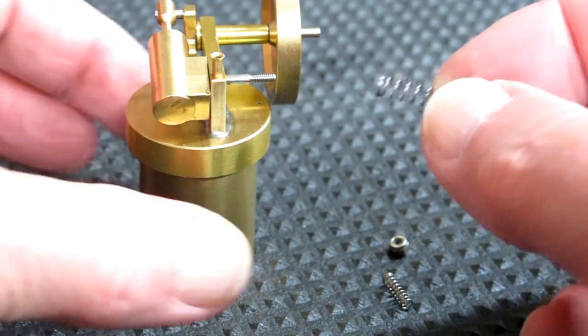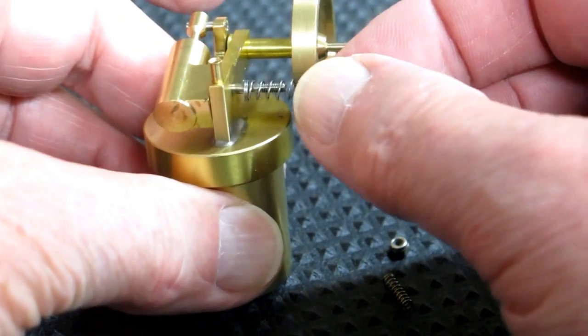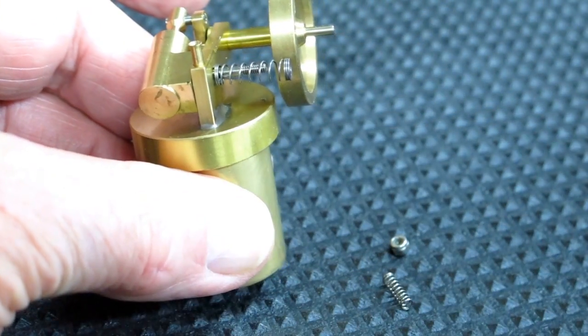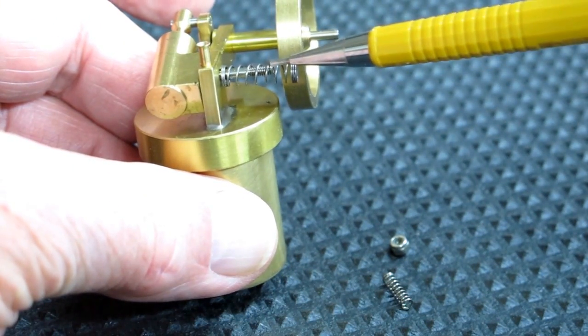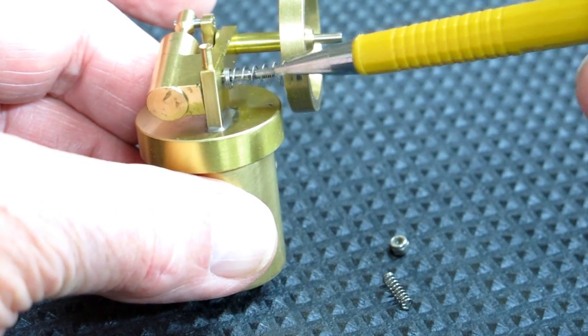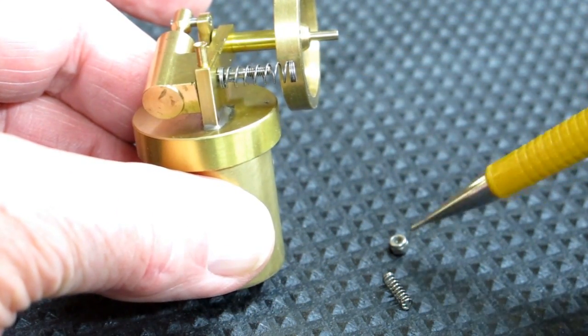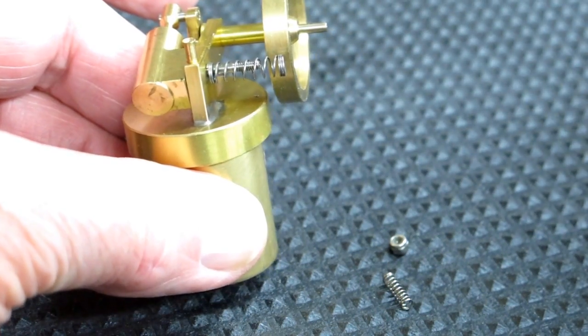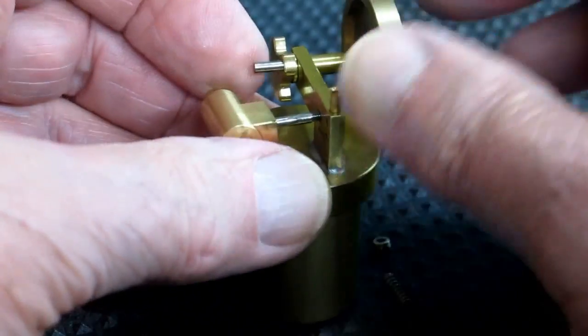Otherwise, you could take a small spring from a ballpoint pen and put that on there. Cut a piece of that spring off and put a two millimeter washer on there and then put a replacement two millimeter nut. We'll just push out of there.